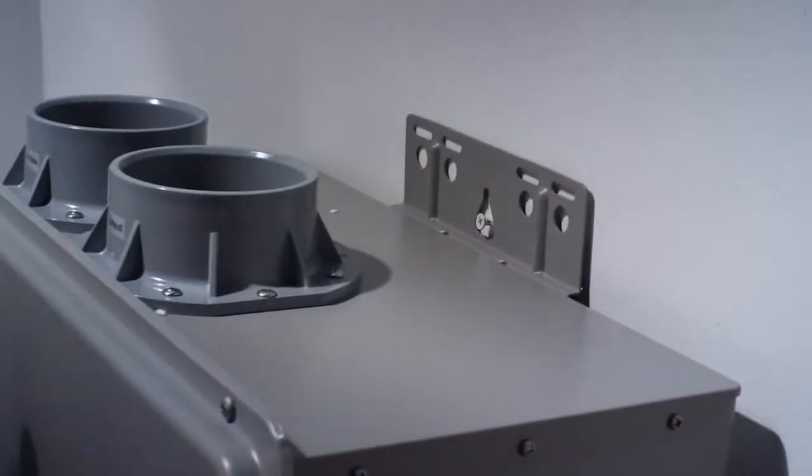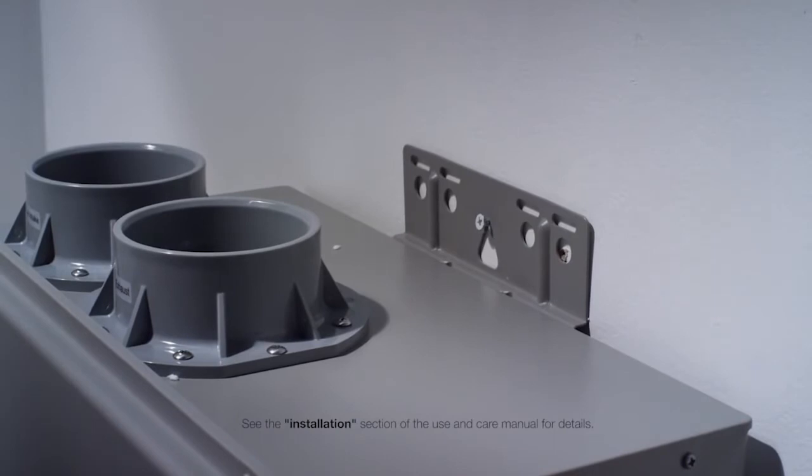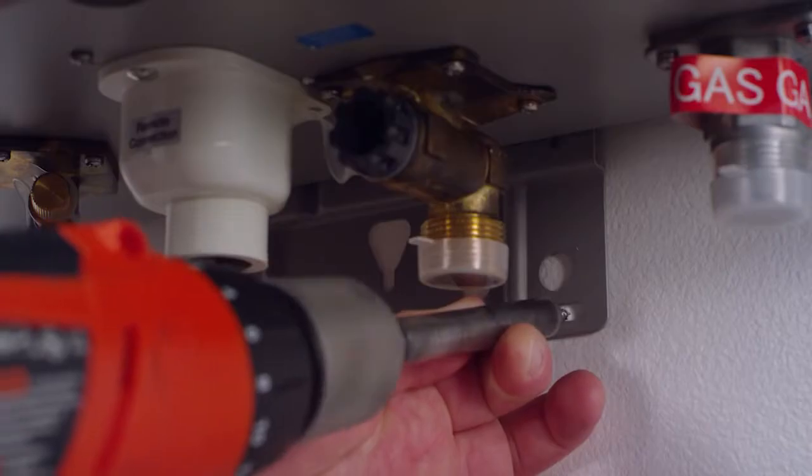Lift the water heater up and align the easy hang slot with the screw and lower into place. Level the water heater and secure with additional fasteners, two at the top and two at the bottom.